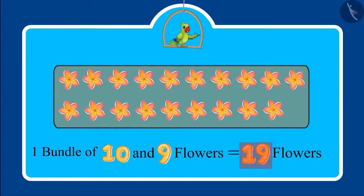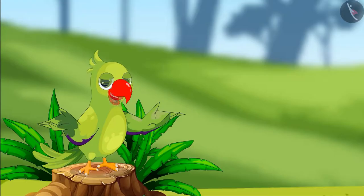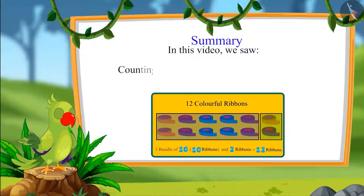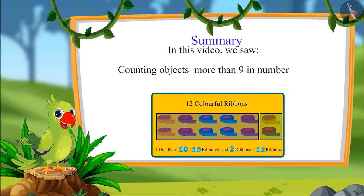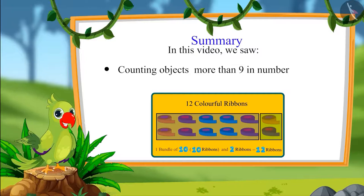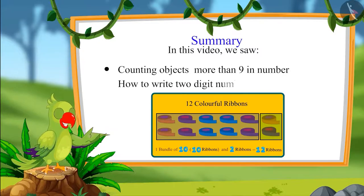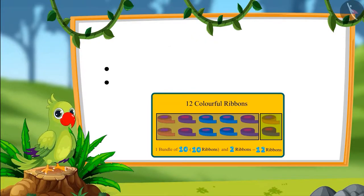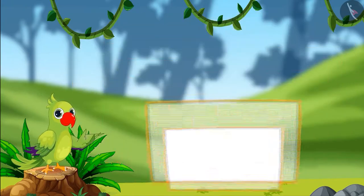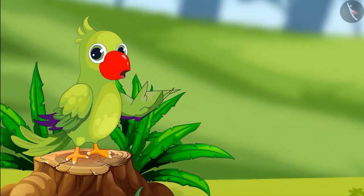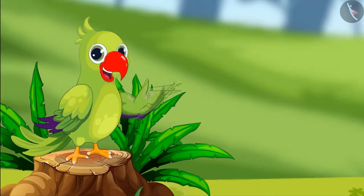That was all for today. In this video, we saw some more examples and common mistakes while counting objects that are more than nine in number, and also saw how to write two-digit numbers. I hope you have understood this topic very well. Bye, friends!